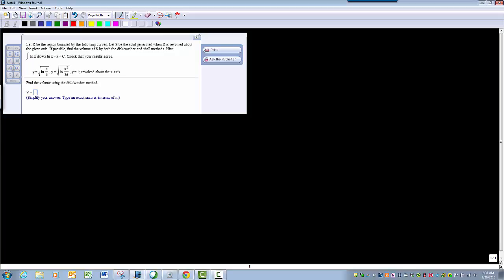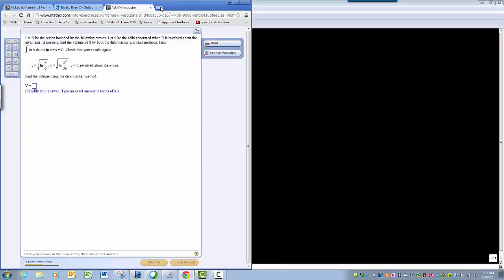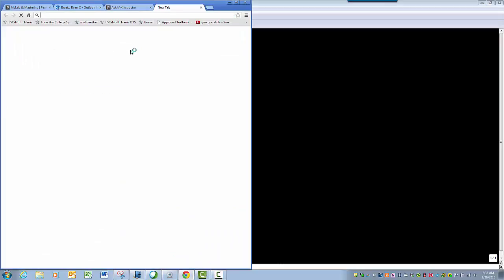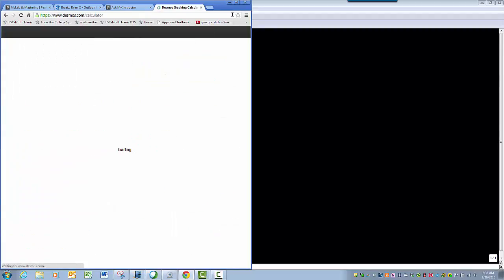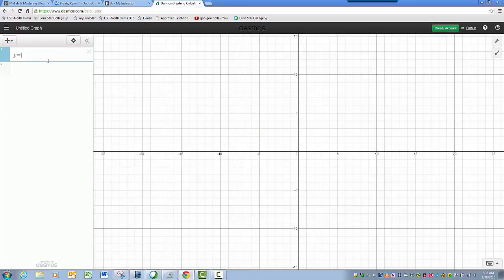So I've got two different equations here. I've got this first guy, we'll call this guy right here number 1. Okay, so I've got the square root of the natural log of x over 6. So let me go ahead and plug that in to a graphing program. Okay, so we've got y is equal to the square root of the natural log of x divided by 6.